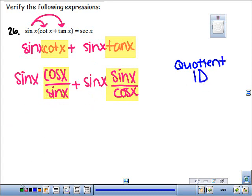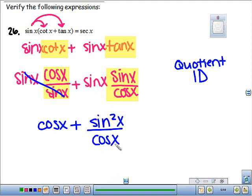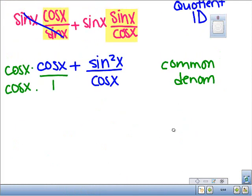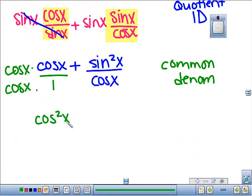Now here, sines will cancel. So I'm left with cosine of x plus sine times sine is sine squared over cosine of x. Now I need to get a common denominator so I can add these. To get my common denominator right now, this is a 1. And then I'm going to multiply by cosine. When I do that, I get cosine squared plus sine squared. And that common denominator is cosine.